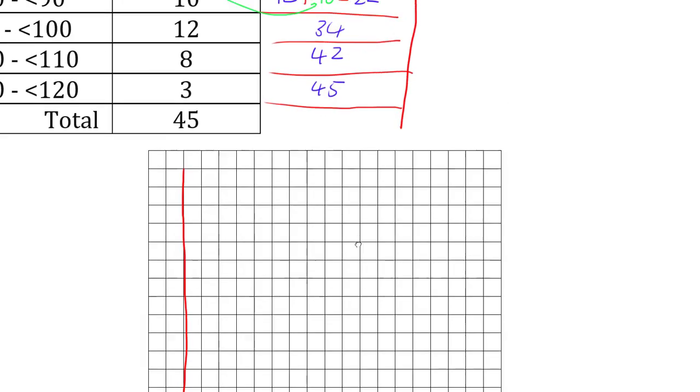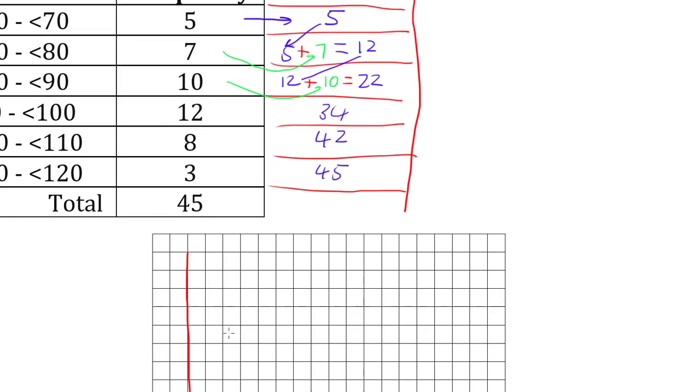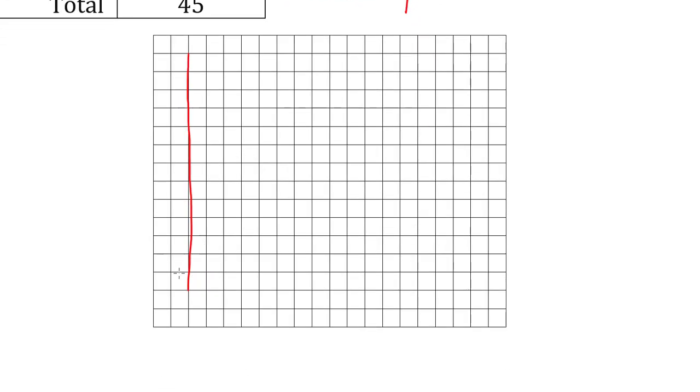So my vertical axis is going to be this cumulative frequency going up to our highest one of 45. So I'm going to start at 0 and work my way up in 5, so I'm going to have 5, 10, 15, 20,